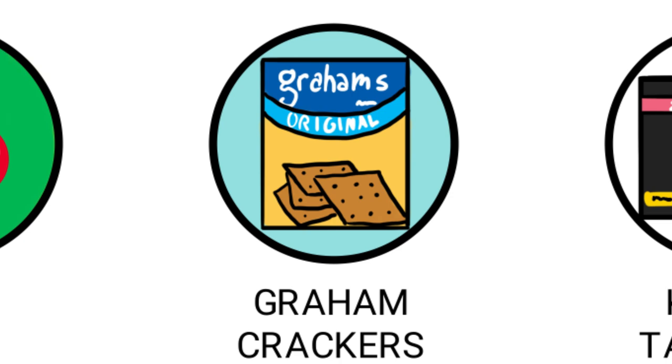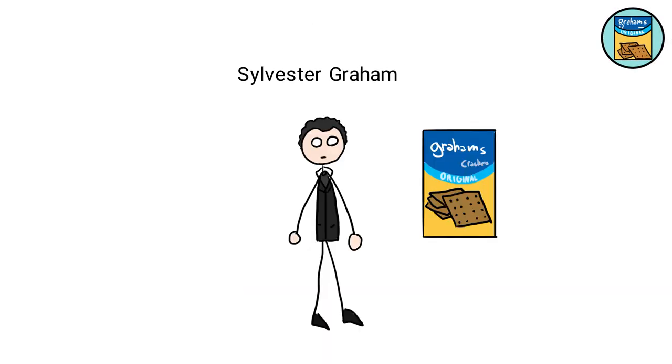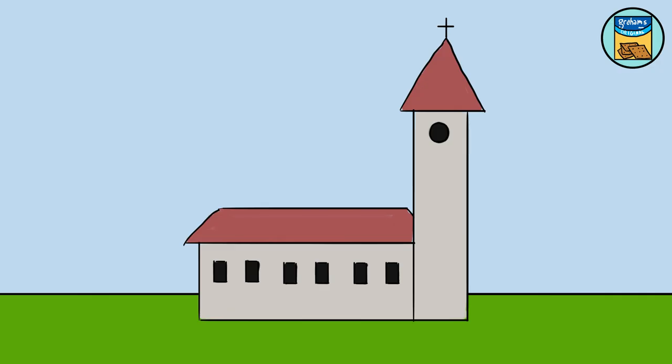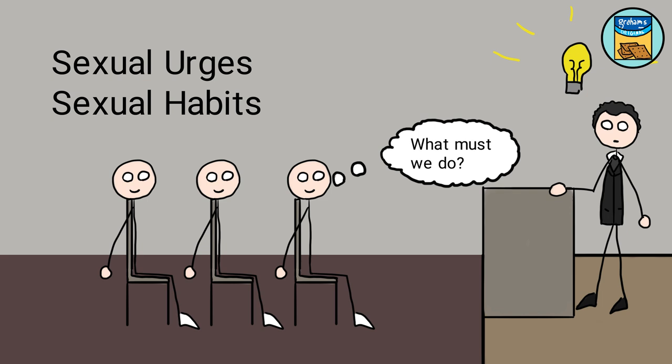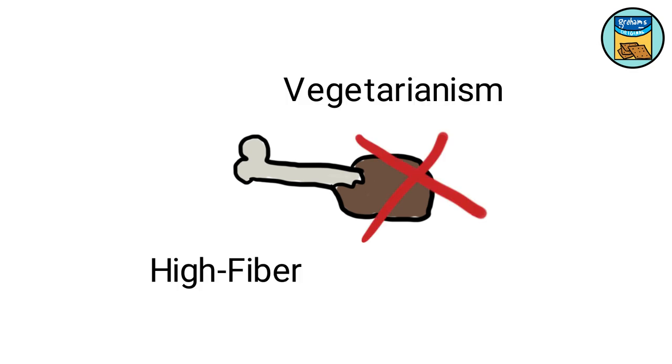Graham Crackers were originally created by the Minister Sylvester Graham to combat sexual urges. Not a joke. The feeling by this minister in the 1800s was that sexual urges and habits, such as masturbation and other pleasures, were detrimental to a person's health. His solution? People should eat the most bland, joyless diet possible. This meant strict vegetarian, high-fiber diets, including his own.